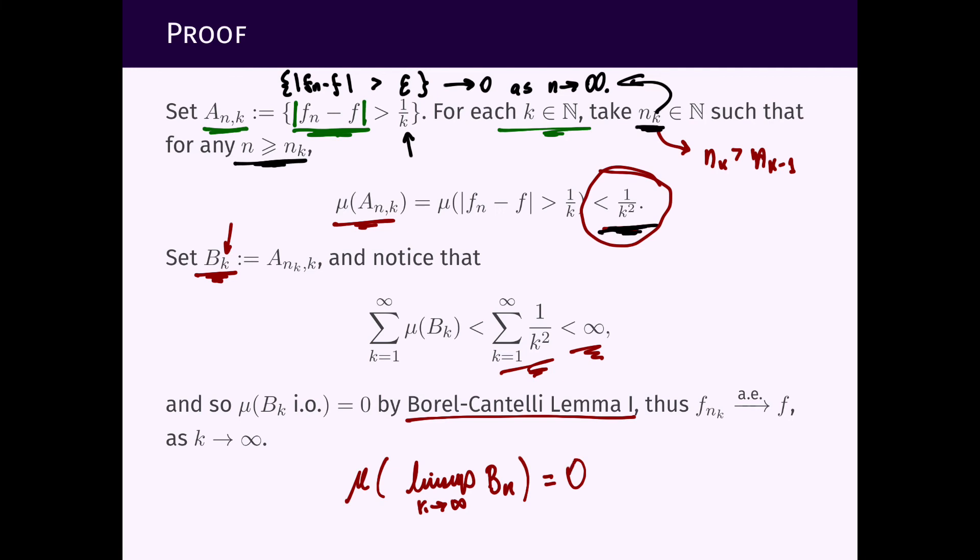And what does it mean for this measure to be zero? It means the measure of the set f_n minus f larger than 1 over k infinitely often is zero.